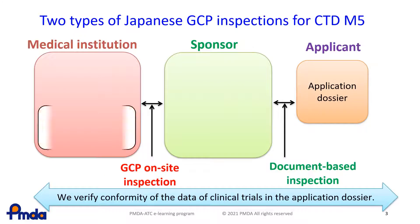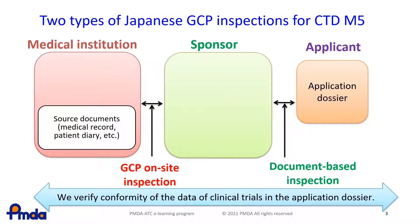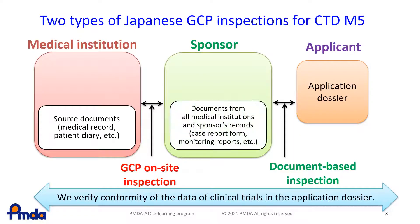In an on-site inspection, the reliability of the case report form, CRF, is checked by comparing it with the source documents held by the sponsor and the medical institutions for the clinical trials. In a document-based inspection, the integrity and consistency of the clinical study report is checked with the CRF and other data such as monitoring reports, et cetera.